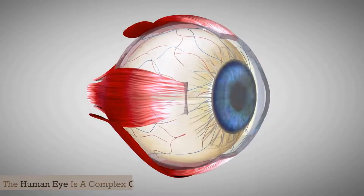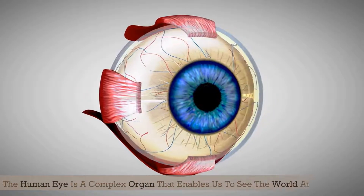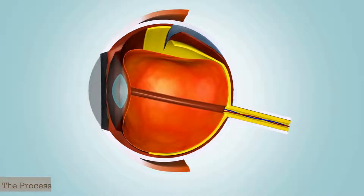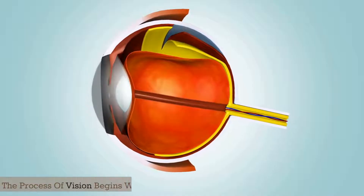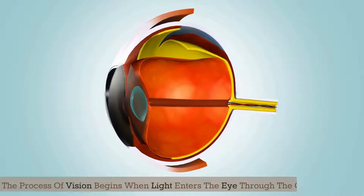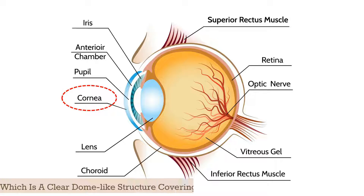The human eye is a complex organ that enables us to see the world around us. The process of vision begins when light enters the eye through the cornea, which is a clear dome-like structure covering the front of the eye.